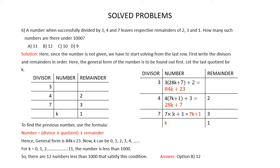Question 6: A number when successively divided by 3, 4 and 7 leaves respective remainders of 2, 3 and 1. How many such numbers are there under 1000? You have to find out how many such numbers are less than 1000. You are given 4 answer options. Since the number is not given, we start from the last row. First write the divisors and remainders in order.